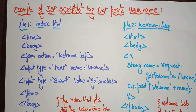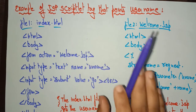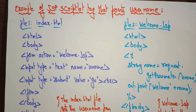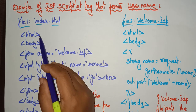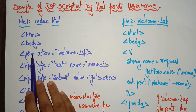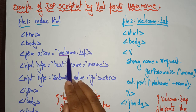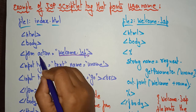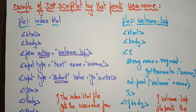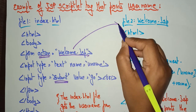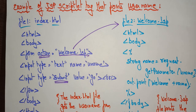Let's take one more example to clarify scriptlet tags — this one prints a username. I have two files here. The first file is index.html. In the HTML body, there is a form with action set to welcome.jsp. Whenever you click the submit button, it performs the action and navigates to welcome.jsp, and whatever message is there in welcome.jsp will be printed on the screen.